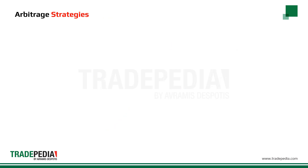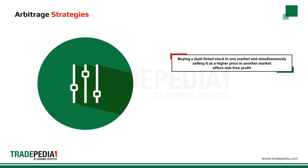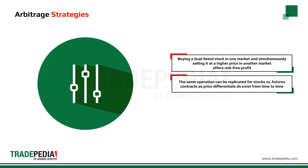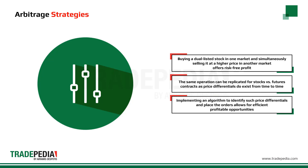Arbitrage strategies involve buying a dual-listed stock at a lower price in one market and simultaneously selling it at a higher price in another market, offering the price differential as risk-free profit or arbitrage. The same operation can be replicated for stocks versus futures contracts, as price differentials do exist between one market and another from time to time. Implementing an algorithm to swiftly identify such price differentials and instantly place the orders allows for profitable opportunities in an efficient manner.